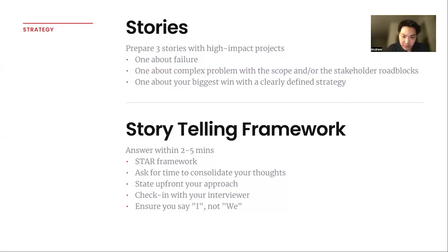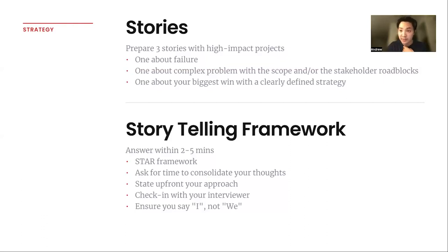Another strategy is to ask for time to consolidate your thoughts before each story. Behavioral interviews are supposed to have a natural flow — it's only weird if you make it weird. Just casually ask for some time to consolidate. Spend 10 to 20 seconds — this isn't like an execution or product sense interview. Just use that time to pick the story best matched to the specific question.